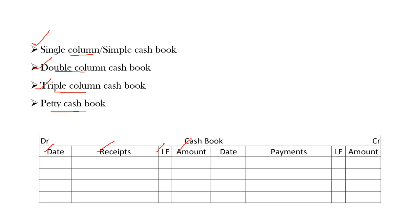In the credit side, we will have the same: date, payment column, LF column, and one amount column. This is an example of a single column cash book. If it is going to be a double column cash book, then you will have two amount columns — one for cash and the other for bank. That is the difference between the single column and double column cash book.